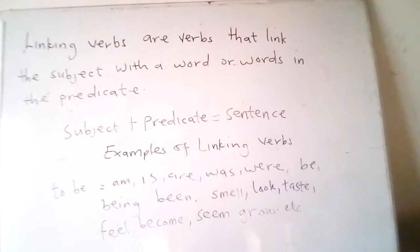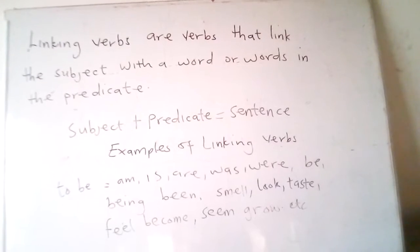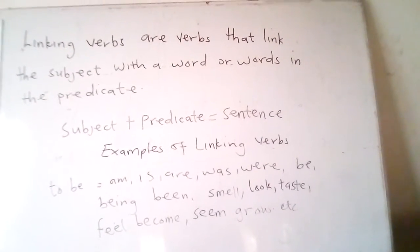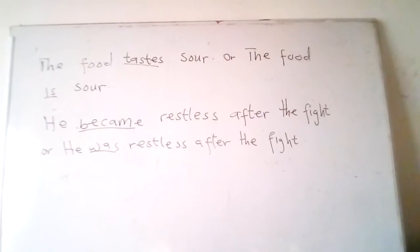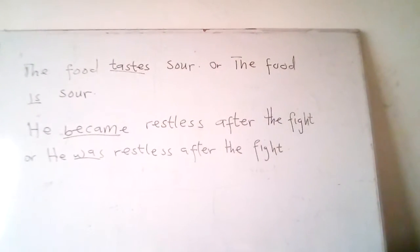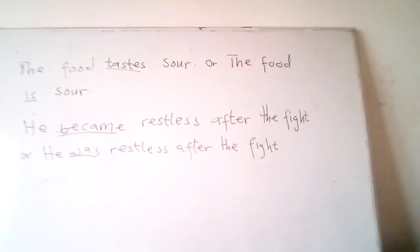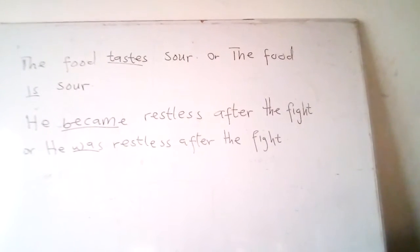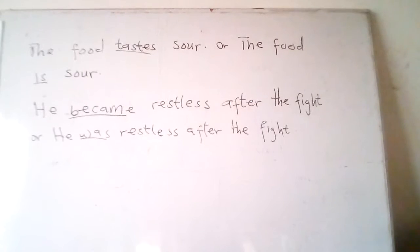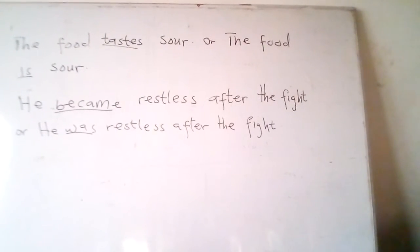A linking verb can generally be identified by replacing or substituting it with 'is' or 'was'. A linking verb functions as 'is' or 'are' in the present tense and 'was' or 'were' in the past tense. For example: 'The food tastes sour' becomes 'The food is sour' — 'tastes' is replaced by 'is'. And 'He became restless after the fight' becomes 'He was restless after the fight' — 'became' is replaced by 'was'.